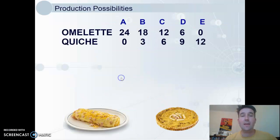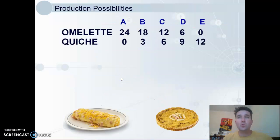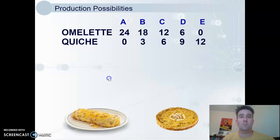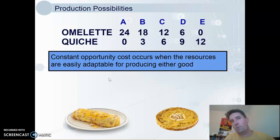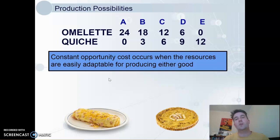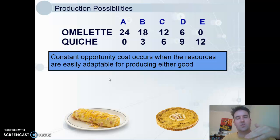Now we have a special type of production possibilities curve. The two goods here are omelettes and teachers, which both really use the same resources. This gives us constant opportunity cost, as resources can be adapted easily. One extra piece will always cost two omelettes, and one extra omelette will always cost half a piece. Plotting this out would give us a straight-line production possibilities curve, which is important. You don't have to plot this out, but if you want to check, you'll see that it is a straight line.